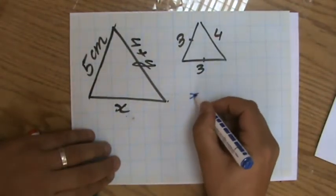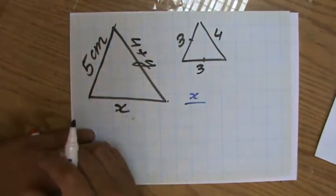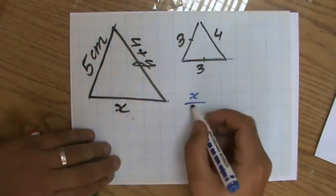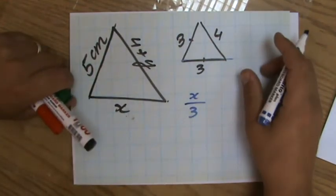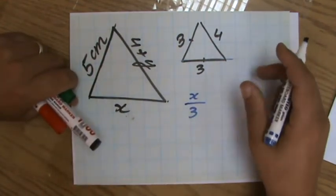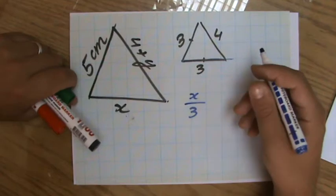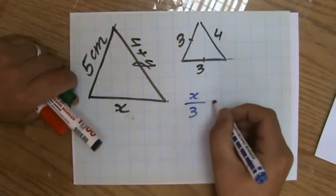I write down X over the corresponding side in the other triangle. Yeah, X corresponds with three. Is X going to be bigger or smaller compared to three? That's an important question to ask yourself. Yeah, it's going to be bigger. Yeah, make sure your answer is bigger. All right. Equals.